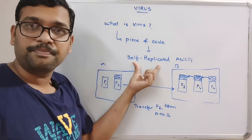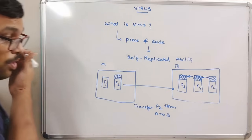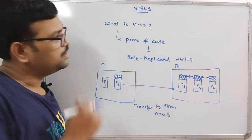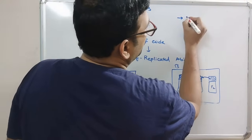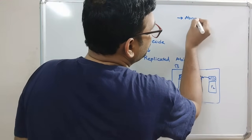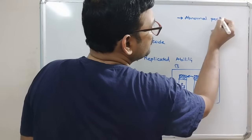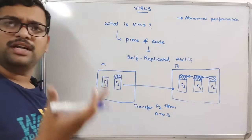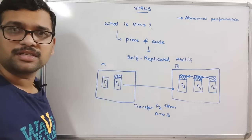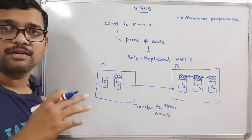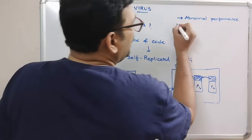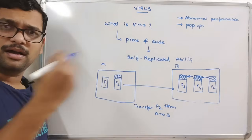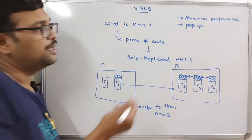That's why we call it self-replicating. Now, how to recognize whether our system is infected with a virus or not. The first sign is abnormal performance — there will be a deviation from normal performance, and response time will be more. Also, different pop-ups will appear — a number of pop-ups will show up.